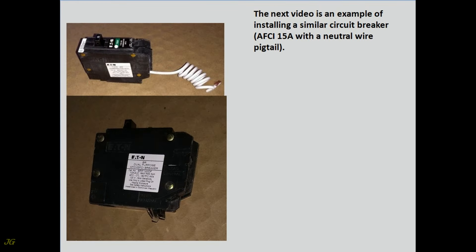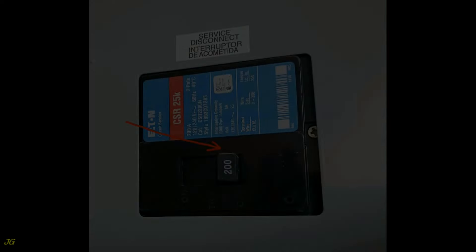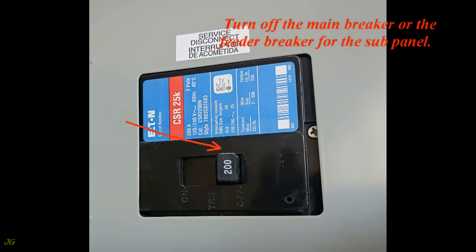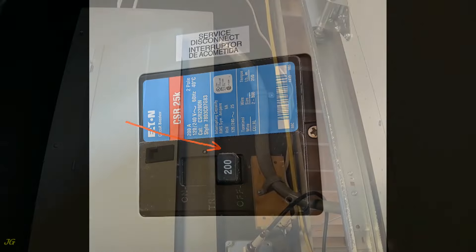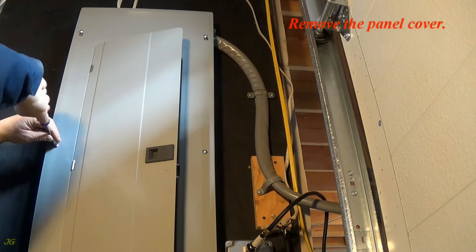The next video is an example of installing a similar circuit breaker, AFCI 15 amps with a neutral wire pigtail. Turn off the main breaker or the feeder breaker for the subpanel. Remove the panel cover.